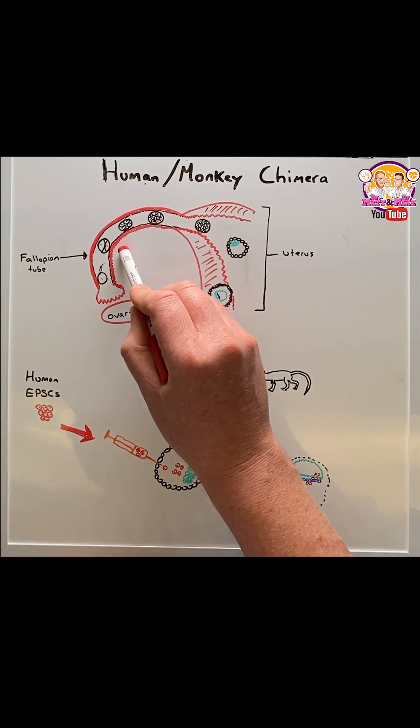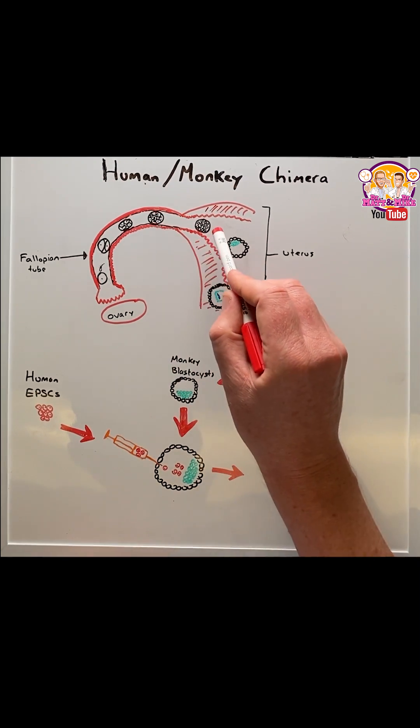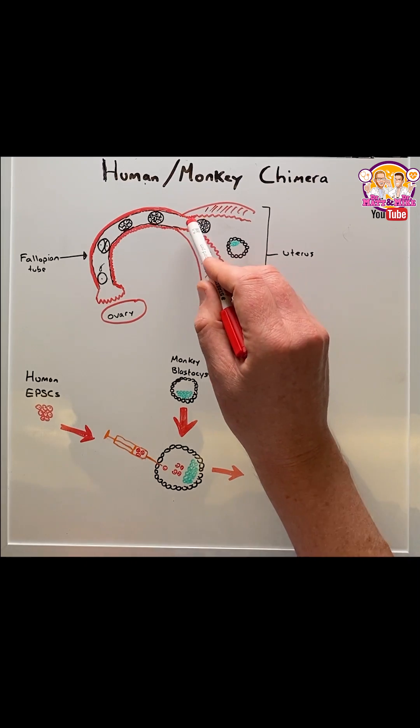At thirty hours the one cell has cloned itself into two cells. This continues down the fallopian tube until it enters the uterus at day four.